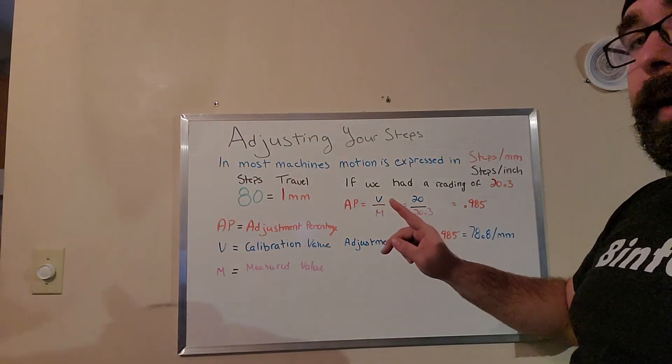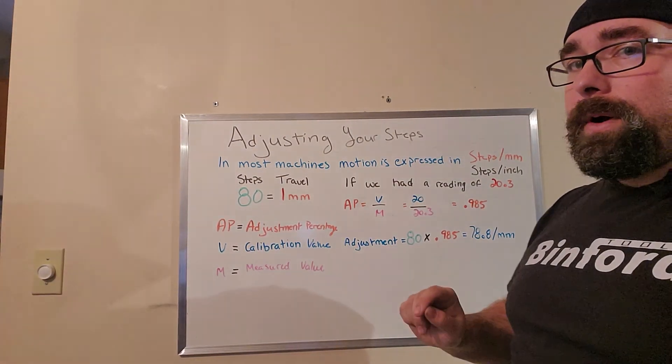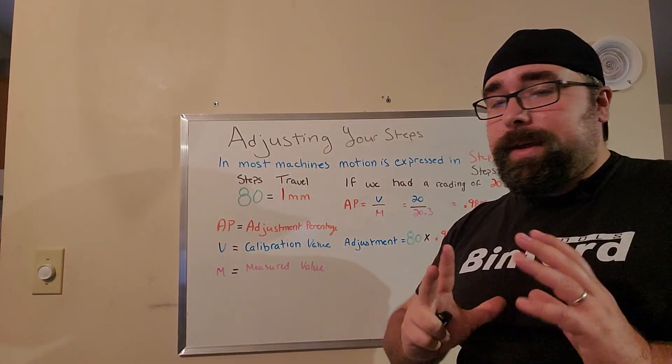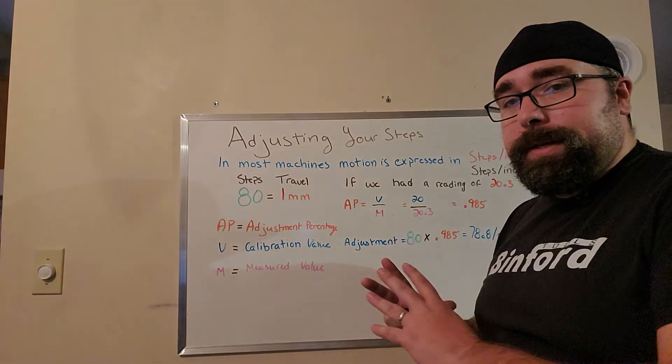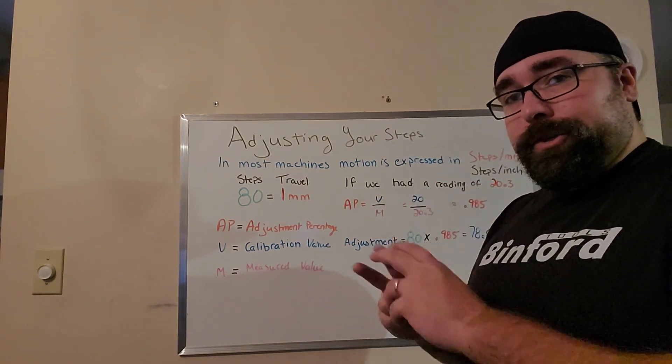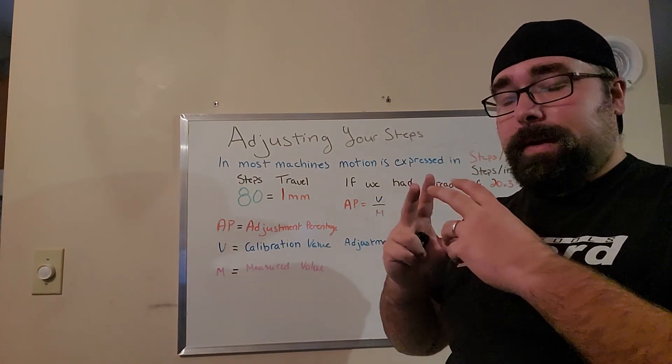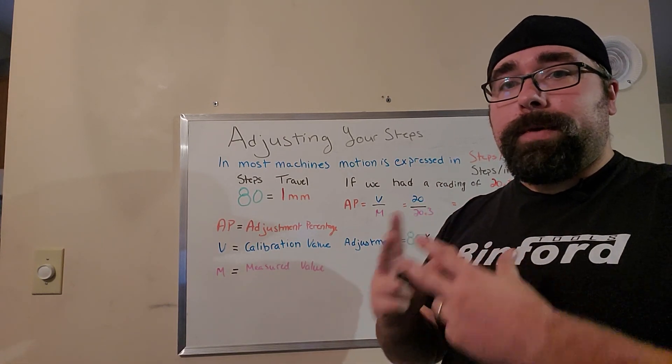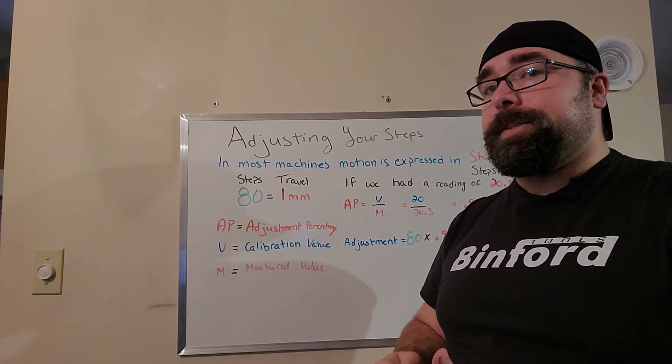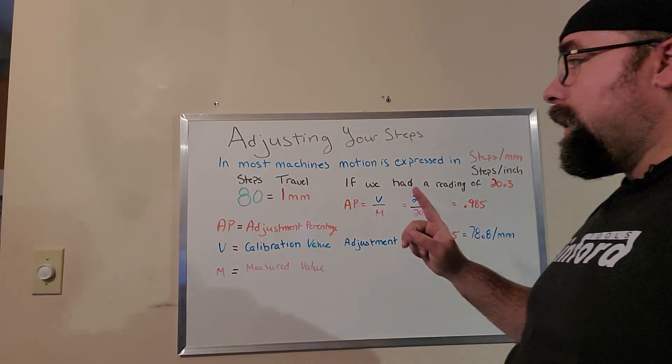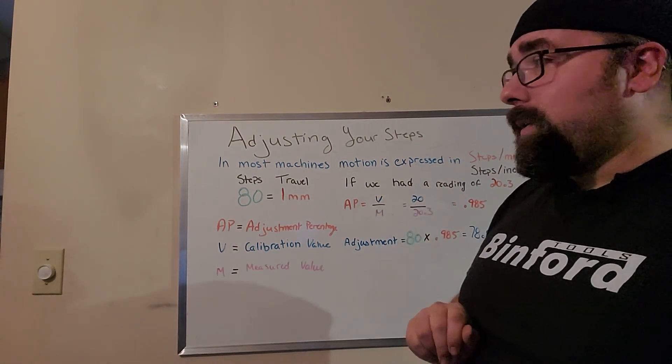So what we're going to do here is we're going to go ahead and adjust that within our EPROMs. I'm not going to go into how to do that because it varies from printer to printer. When you're ready and you're sure that you want to make a calibration adjustment, go and check with your machine supplier or find a video on how to get to that information if you don't know how. But I will show you the math to correct the calculation.